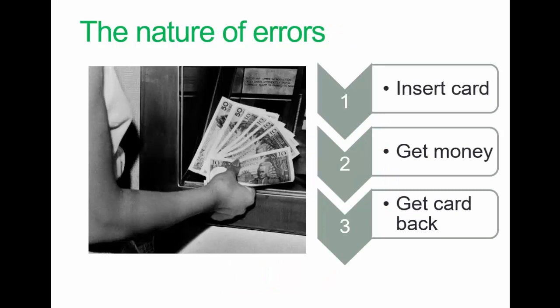Here's a classic example of the nature of a methodic error, going back to the days when we first had cashpoint machines. The process was we'd insert the card, type in our code, tell it how much money we'd want, we'd get our money back, and then we'd get the card back. What used to happen was that people would get their money, and having fulfilled the objective they set out to achieve, would walk away leaving the card in the machine. Nowadays you'll find that you'll get your card back before you get your money. So this error was designed out.